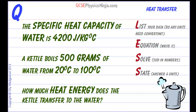The specific heat capacity of water is 4200 joules per kilogram degree Celsius. A kettle boils 500 grams of water from 20 degrees Celsius to 100 degrees Celsius. How much heat energy does the kettle transfer to the water?